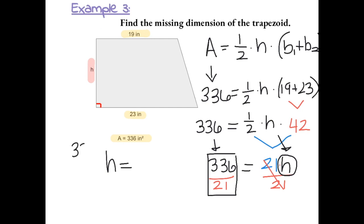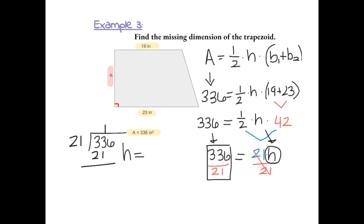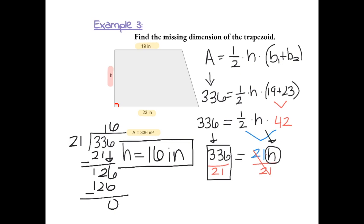We divide 336 by 21. The missing dimension, which is the height, is equal to 16 inches. You can always check by taking your answer and plugging it into the original formula and seeing if you get the given area of 336 inches squared.